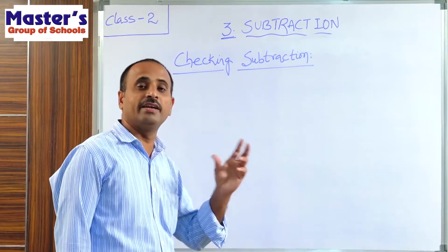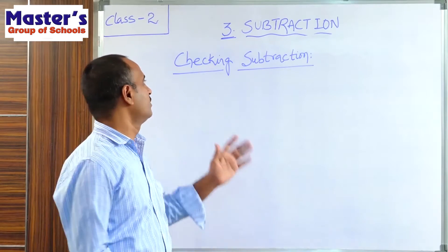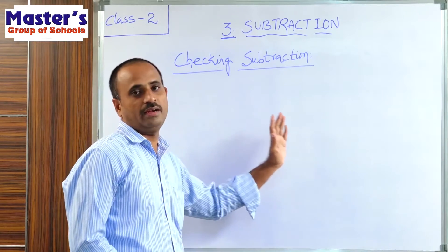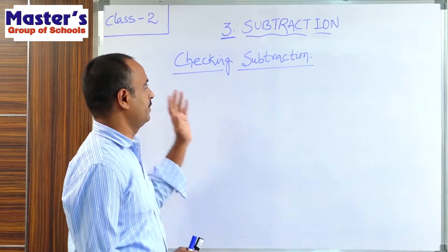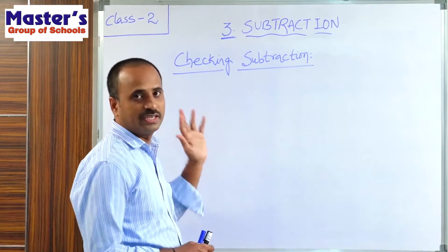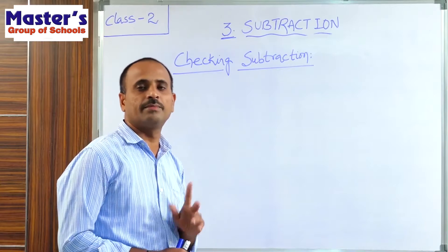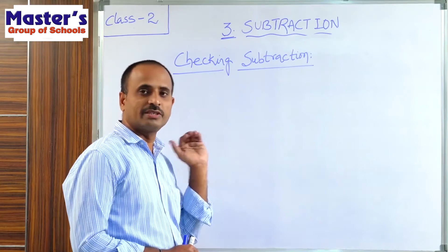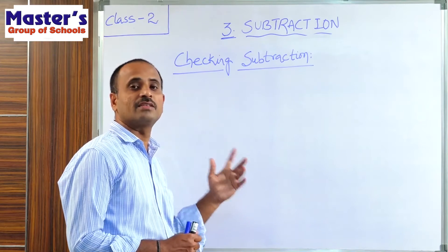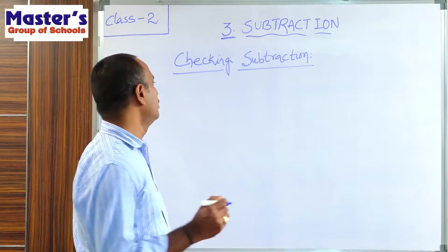Subtraction and addition are opposite to each other. By using addition we can check subtraction. Let us understand this with a simple example using two-digit numbers. We can subtract those two-digit numbers and verify whether the answer is correct or not. Take two numbers: 53 and 26.